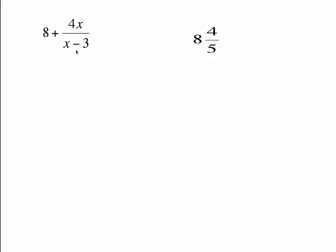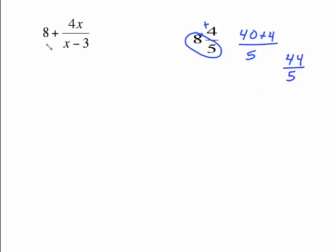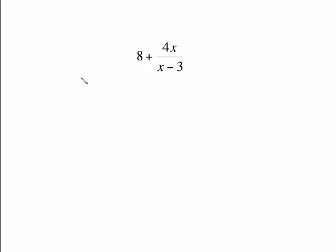Sometimes you have to add a whole number to a fraction, and the way I like to think about it is like a mixed number. For example, 8 and 4 fifths can be changed to an improper fraction by multiplying the whole number times the denominator and adding it to the existing numerator: 8 times 5 is 40, plus 4, over the denominator gives 44 fifths. Similarly, 8 plus 4x over x minus 3 is like a mixed number — here's your whole number and here's your fraction.